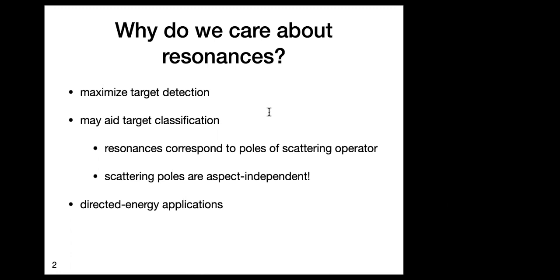There has been a lot of interest in this as a possible aid to classifying targets. It turns out these resonances correspond to poles of the scattering operator. The scattering operator is analytic in one of the half-planes depending on which sign you choose, and the poles are characteristic of the object that's doing the scattering.